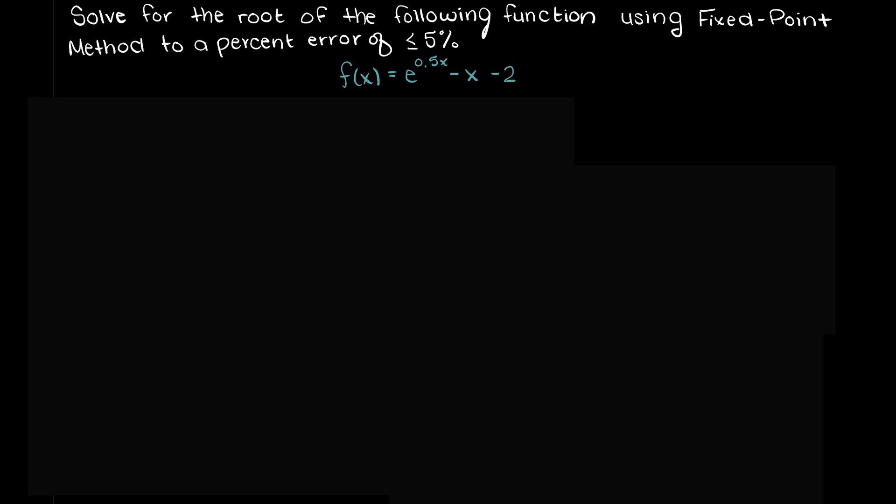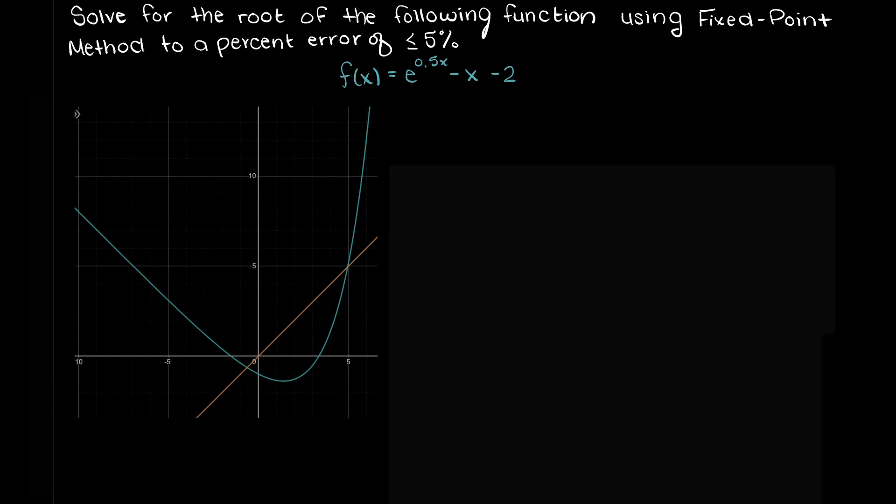So if you remember from our previous video, the fixed point method is an open root finding method used in numerical methods. This question is asking us to find the point at which this function crosses the x-axis, which as we know is called a function's root. Let's just quickly throw on a graph of what this function looks like.